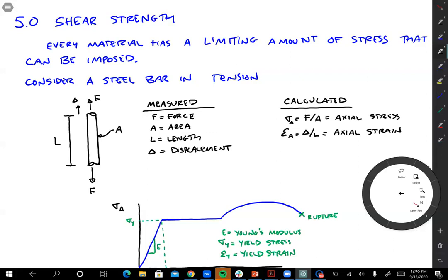All right, in this lesson we're going to start talking about shear strength. So we finished shear stress, now we're moving on to these limiting conditions of shear stress that result in soil failure or just material failure in general. We'll start with simple material like steel and then we'll move on to soil, which is a bit more complicated.